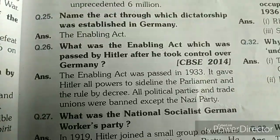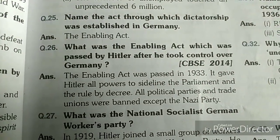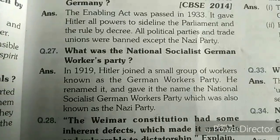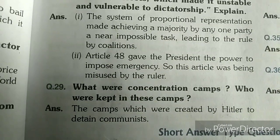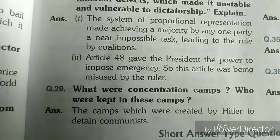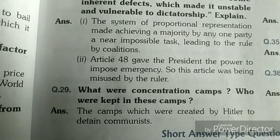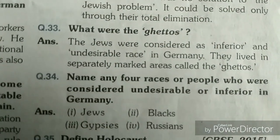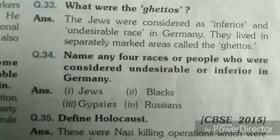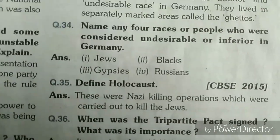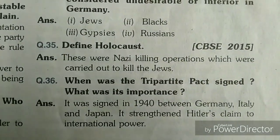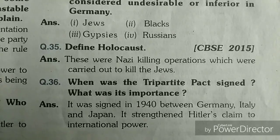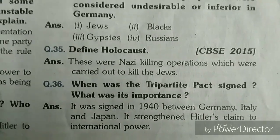What was the National Socialist German Workers' Party? What were concentration camps and who were kept in these camps? — very important. What were the ghettos? — also important. The 35th question definition is important, the 34th is not so important, but the 36th is important: the Tripartite Pact — when was it signed and what was its importance? — very very important.